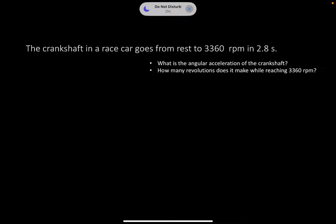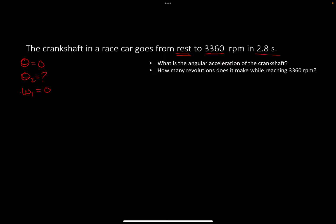A crankshaft in a race car goes from rest to 3360 RPM in 2.8 seconds. This is an angular kinematics problem. I want to identify as much as I can. The angle at the beginning is 0 — it's starting at rest, so theta 1 equals 0. Theta 2 I don't know. And the angular speed at the beginning, W1, is 0 since it starts at rest.